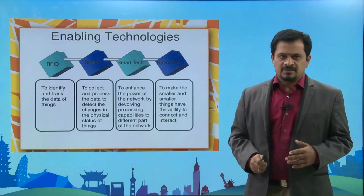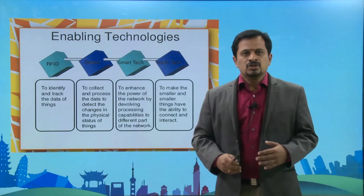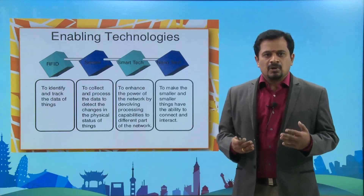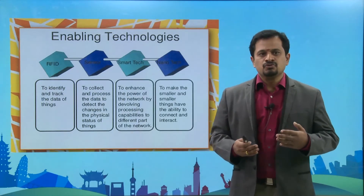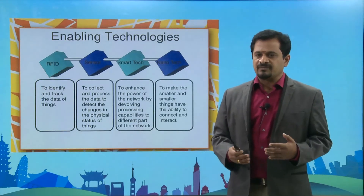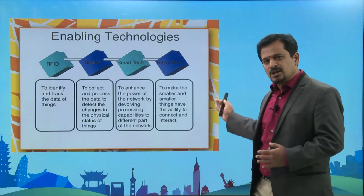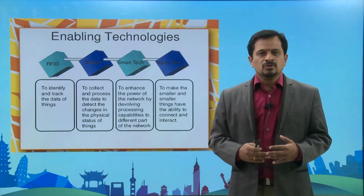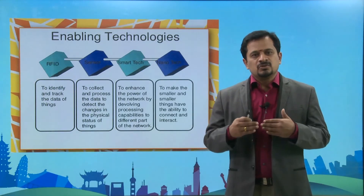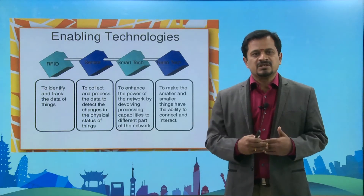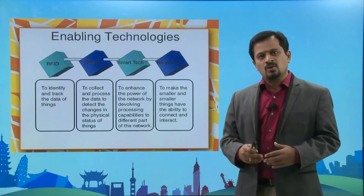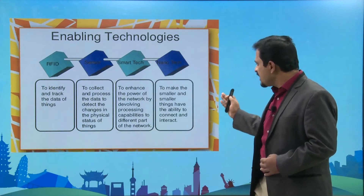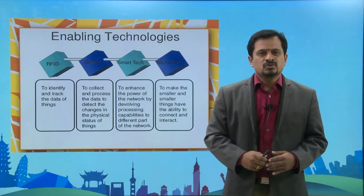Smart technology enhances the power of the network by developing processing capabilities to different parts of the network. Nanotechnology addresses energy as a big concern — to conserve energy and consume less power, devices use nanotechnology sensors to make things smaller and smaller.